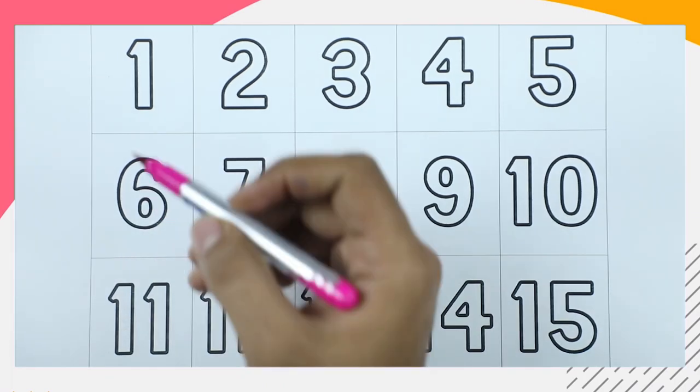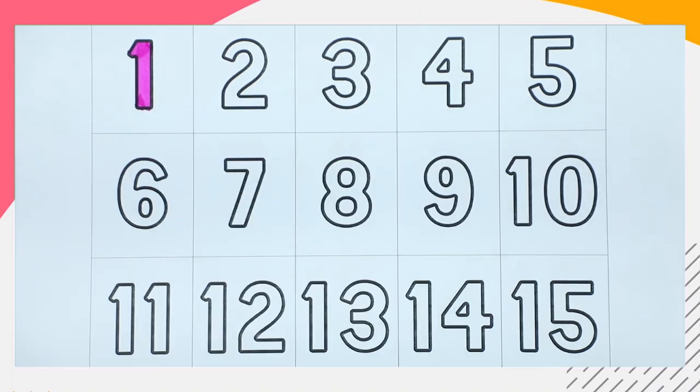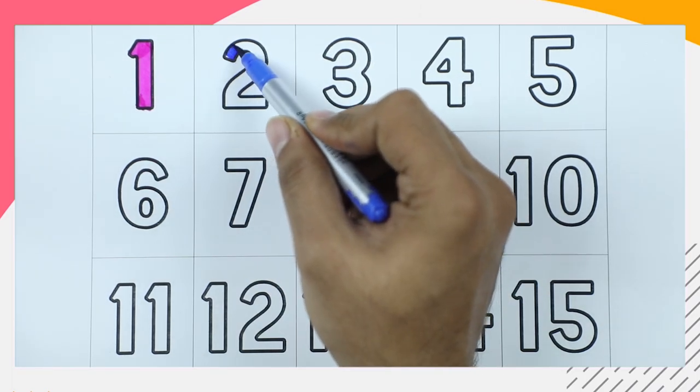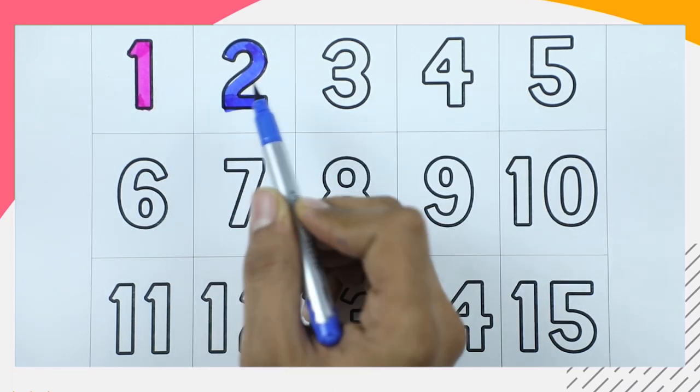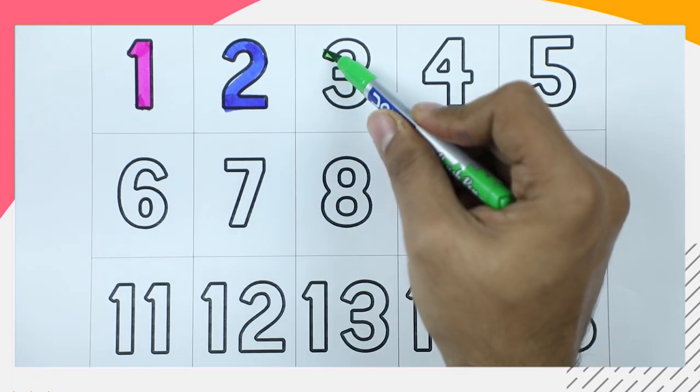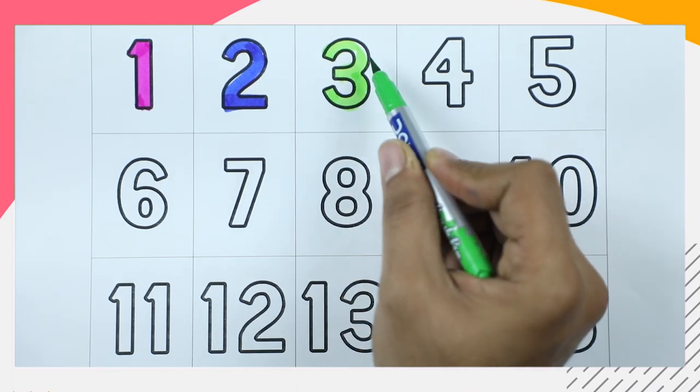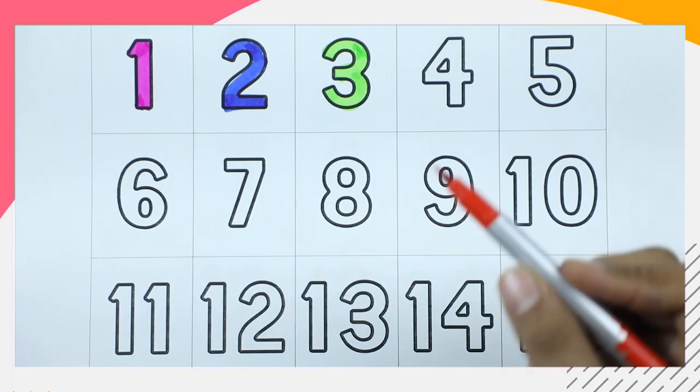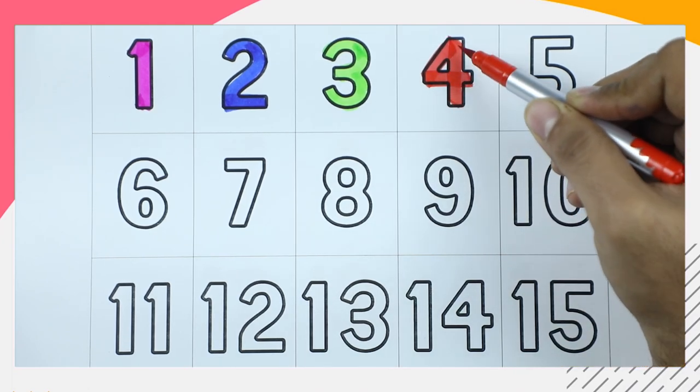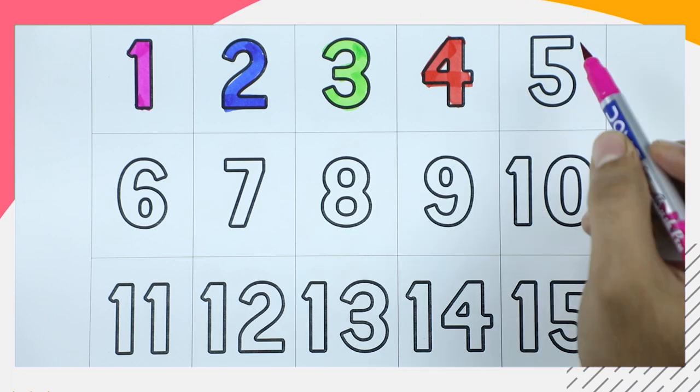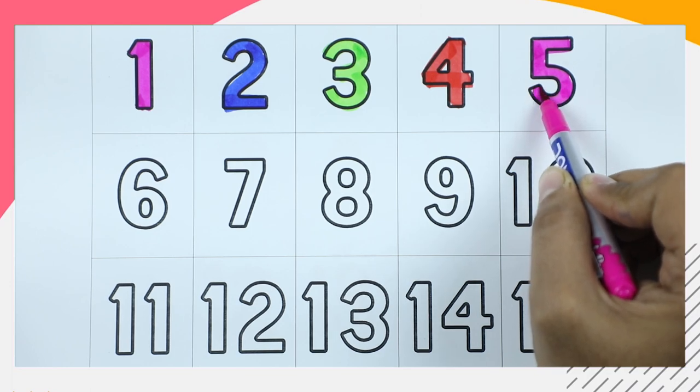We will learn numbers. Number 1, it's number 1 with pink color. Number 2, with blue color, it's number 2. Number 3, with green color, it's number 3. Number 4, with red color, it's number 4. Number 5, with pink color, it's number 5.